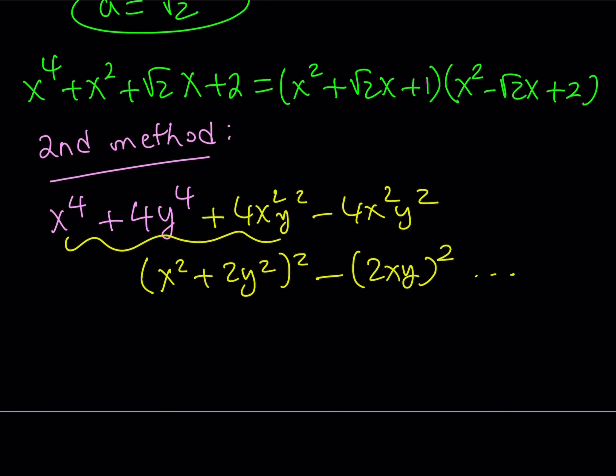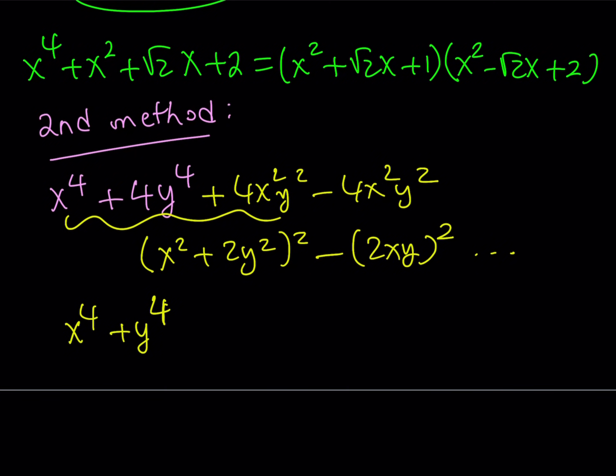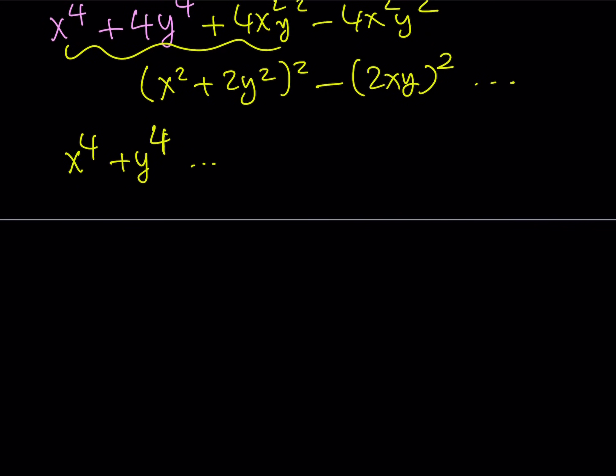So, this is really nice. You know that the sum of two squares cannot be factored if you're looking for rational or irrational coefficients. In other words, real coefficients. But if you're looking for complex, that's a different story. But with the case of fourth powers, obviously, you can also use the same method, x to the fourth. You can apply the same method to x to the fourth plus y to the fourth if you don't worry about the coefficients being irrational. So, this is also factorable in that sense. Let's go ahead and see how we can apply this to our problem.